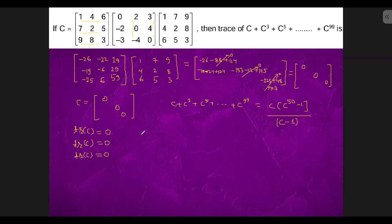come out to be 0, and this will continue up to trace of C⁹⁹ will come out to be 0. And if we add everything, we will get trace equals 0. So this is the answer.